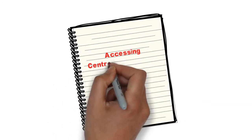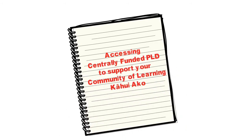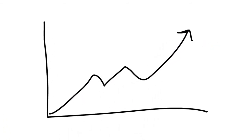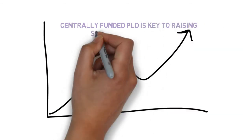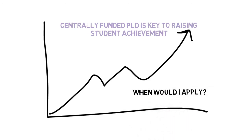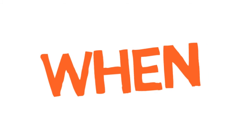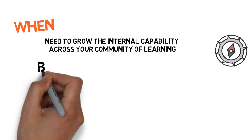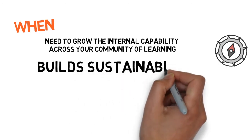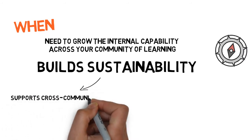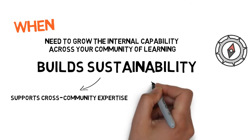How do I access professional learning and development to support my community of learning, kā hui āko? Using centrally funded professional learning and development is one of the key strategies a kā hui āko can use in their critical work in raising student achievement. A kā hui āko may apply for centrally funded PLD to use external expertise to grow the capability of teachers, building sustainability when the centrally funded facilitator has moved out.